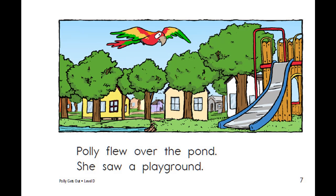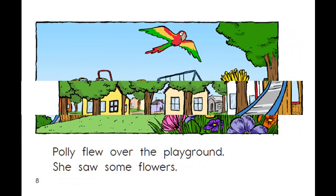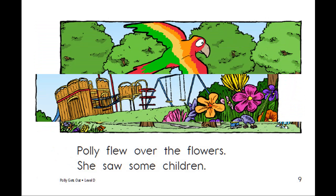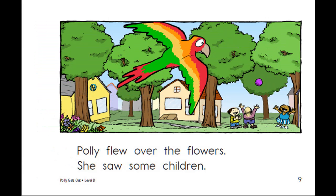Polly flew over the pond. She saw a playground. Polly flew over the playground. She saw some flowers. Polly flew over the flowers. She saw some children.